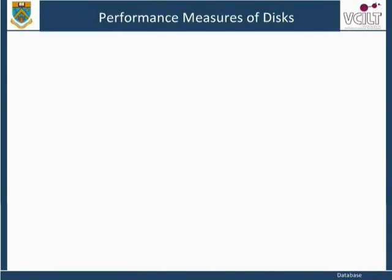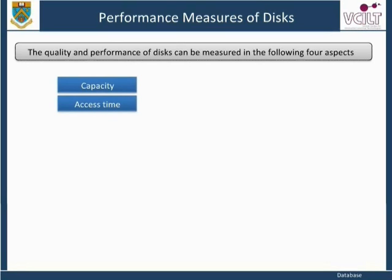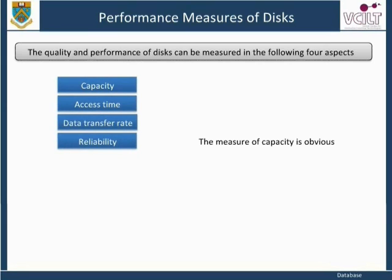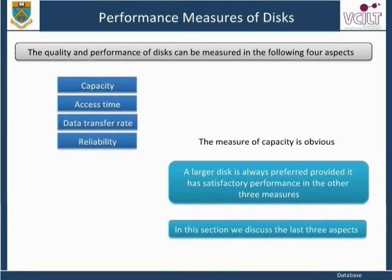The quality and performance of disks can be measured in four aspects: capacity, access time, data transfer rate, and reliability. The measure of capacity is obvious — a larger disk is always preferred, provided it has satisfactory performance in the other three measures. In this section, we discuss the last three aspects.